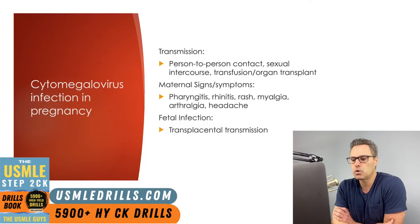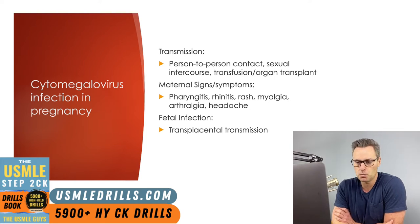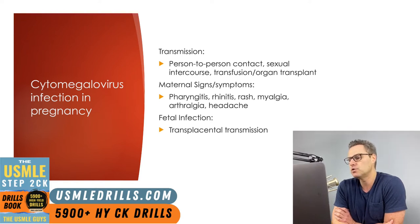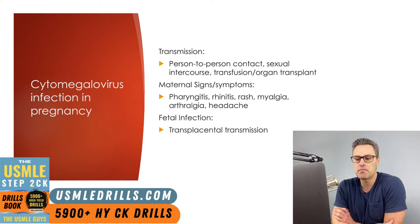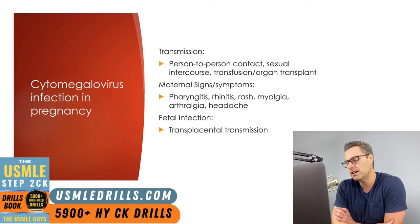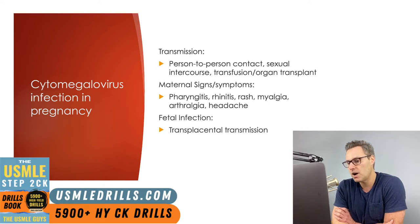Moving on to the C in the TORCH mnemonic, this stands for cytomegalovirus, which can be transmitted to the pregnant patient via person-to-person contact, sexual intercourse, or blood transfusions or organ transplants. Patients can be asymptomatic or they may present with pharyngitis, rhinitis, or a rash. The rash varies drastically from patient to patient — it could be maculopapular, macular, papular, or more morbilliform, so there's not one distinct type of rash to expect.